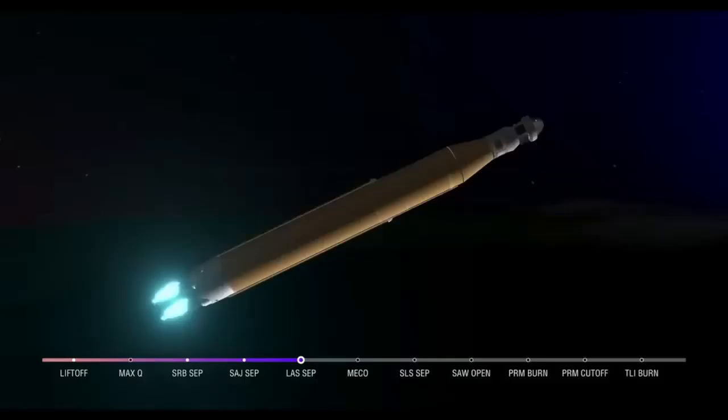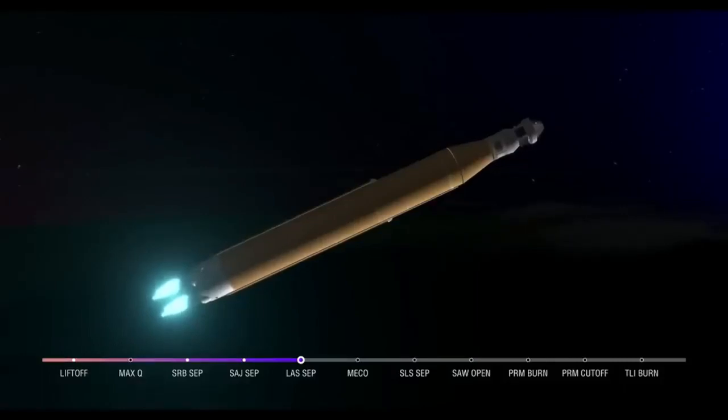We just heard the call for three engine press, meaning if SLS were to lose an engine at this point in the mission, we could still achieve a nominal mission. We would just have an extended main engine cutoff time. However, we still have four good engines, all at maximum thrust right now, powering the first flight of Artemis at 5,200 miles per hour, 148 miles downrange.